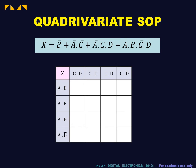We now generate the Karnaugh map for a quadrivariate sum of products expression. For the SOP expression, we stuff the bag for each product term with ones, and at the end fill in the zeros.